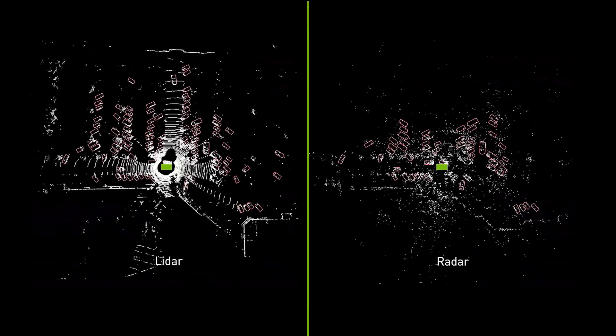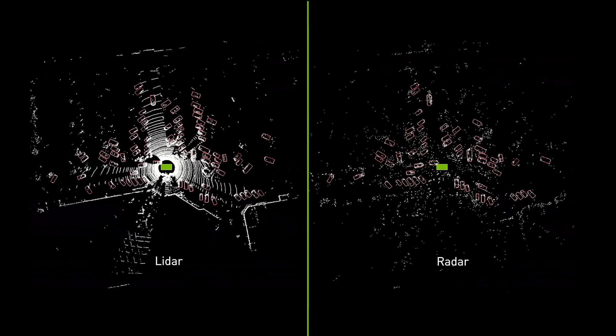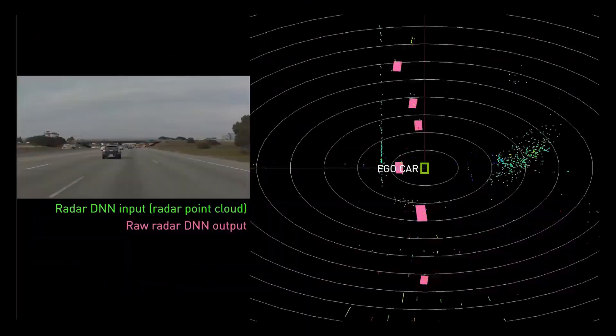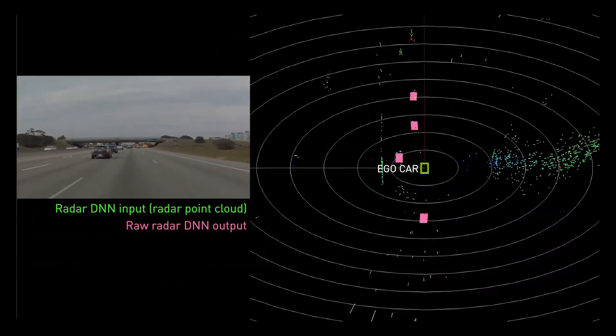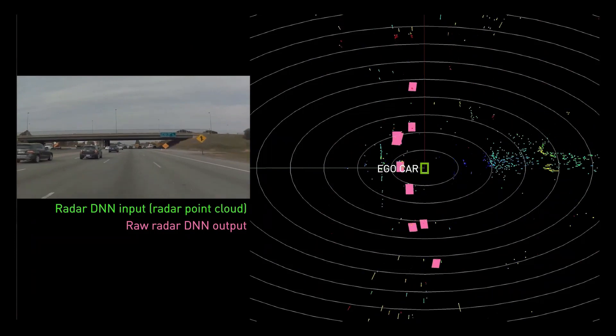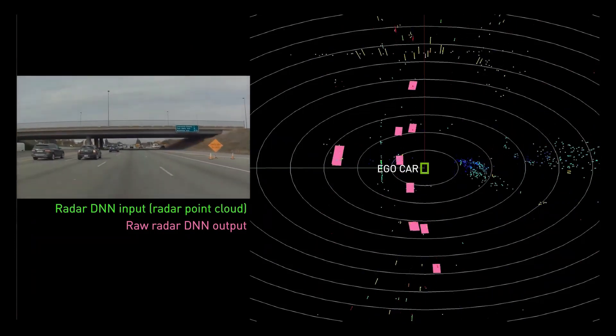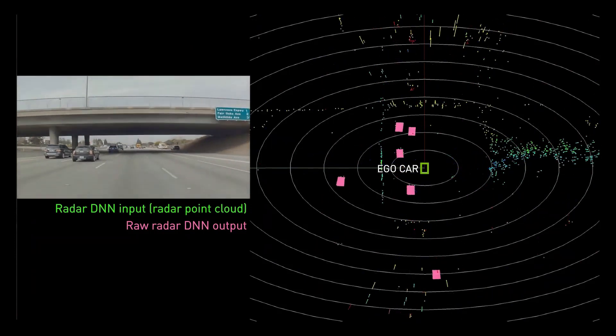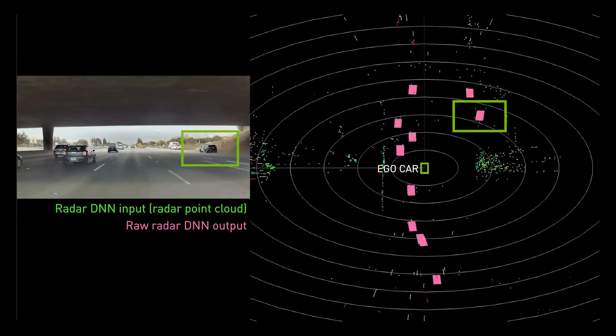In this way, the radar DNN learns to not only detect cars, but also learns their 3D shape and orientation, which is particularly valuable in challenging scenarios such as this one detecting a stationary vehicle near an overpass bridge. Here we see the raw frame-by-frame radar DNN output showing the correct detection of this vehicle.